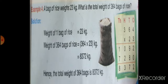And read the last line of the question. What is the total weight? Weight has been asked. Weight is always written in kg form. So hence the total weight of 364 bags is 8372 kg.